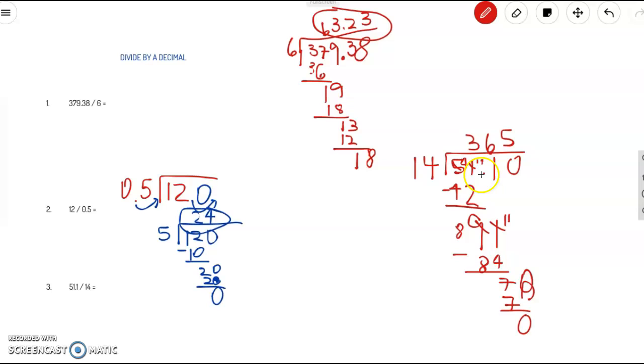We have two digits here after the decimal point. So same thing here. So the answer is 3.65.